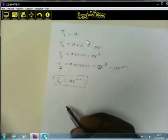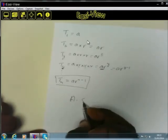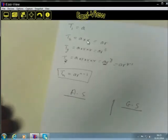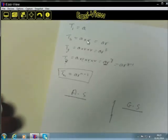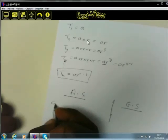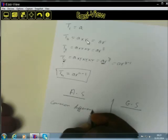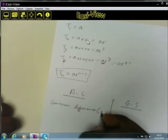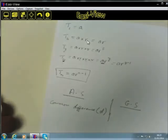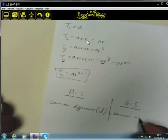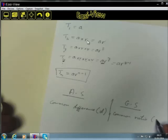Now let us look at the differences between arithmetic and geometric sequences. With arithmetic sequences we talk about the common difference, and we use D for that. With geometric sequences, we talk about the common ratio, and for that we use R.